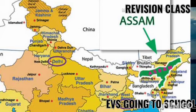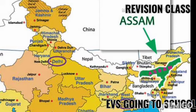Look very carefully at Assam in the map. Assam is a state in North Eastern India, known and famous for its wildlife, archaeological sites, and tea plantations.